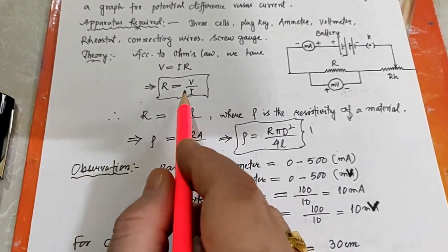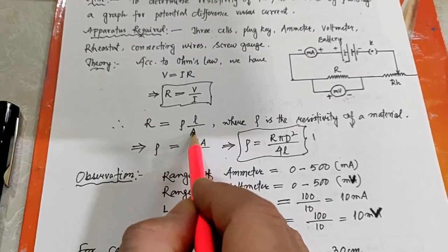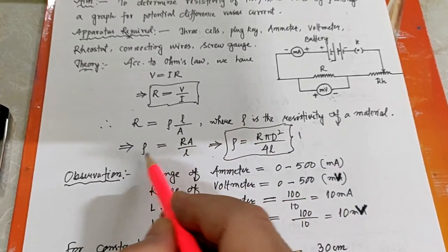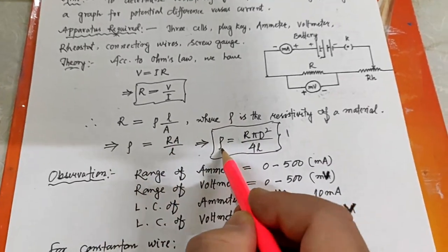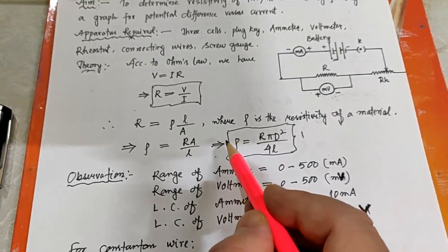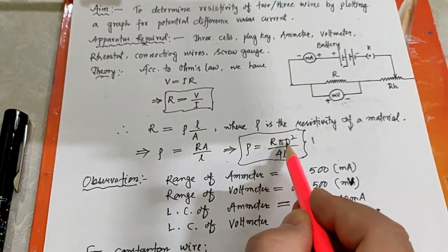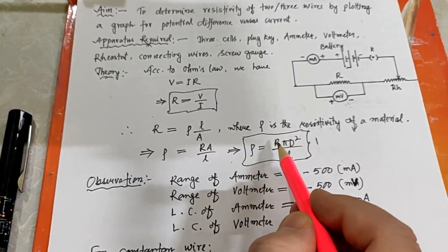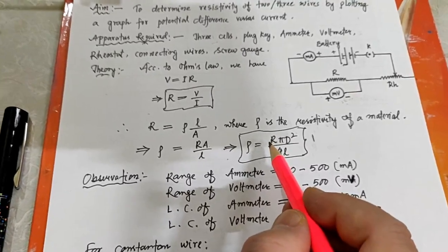After finding the resistance, we know that R equals rho times L upon A, where rho is the resistivity of the material. So rho equals R times A divided by L. The area of cross-section of the wire is pi times r squared, or equivalently pi times D squared divided by 4. Using this formula, we can find out the resistivity of the two different wires.